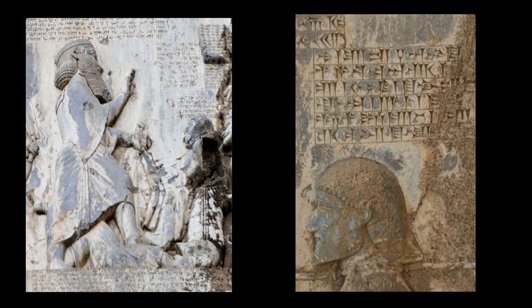Sections 55–57: "King Darius says: You who shall be king hereafter, protect yourself vigorously from lies; punish the liars well. If thus you shall think, may my country be secure. This is what I have done; by the grace of Ahura Mazda have I always acted. Whosoever shall read this inscription hereafter, let that which I have done be believed. You must not hold it to be lies. King Darius says: I call Ahura Mazda to witness that this is true and not lies — all of it have I done in a single year."